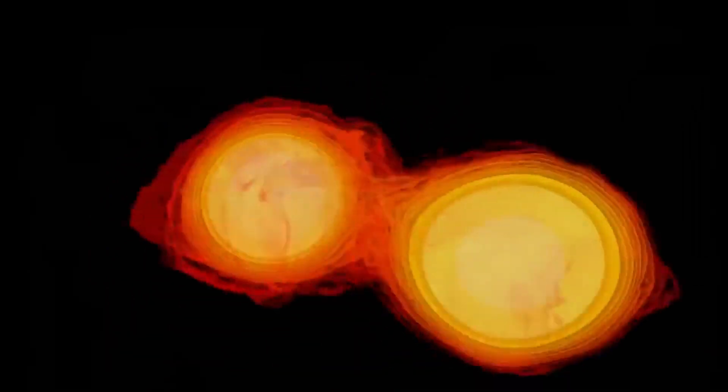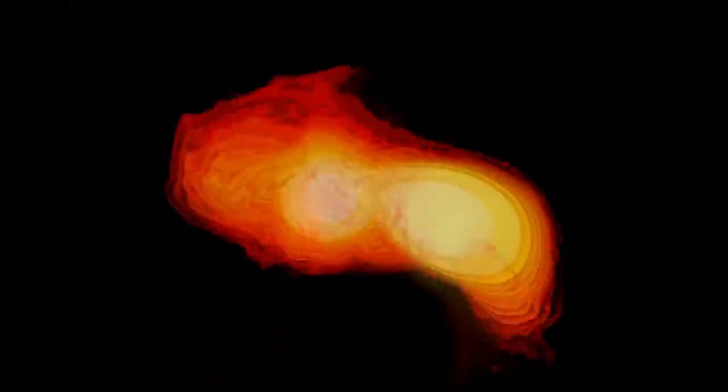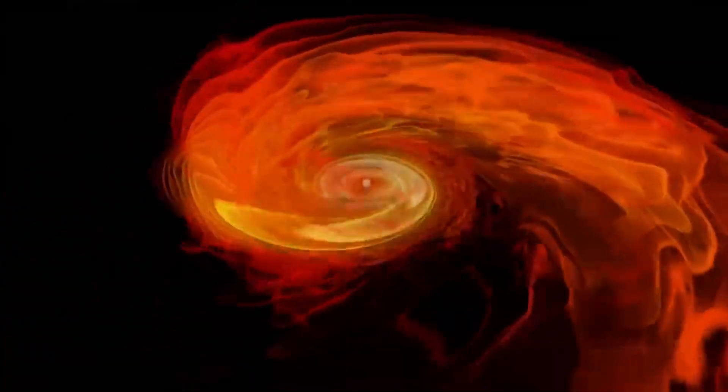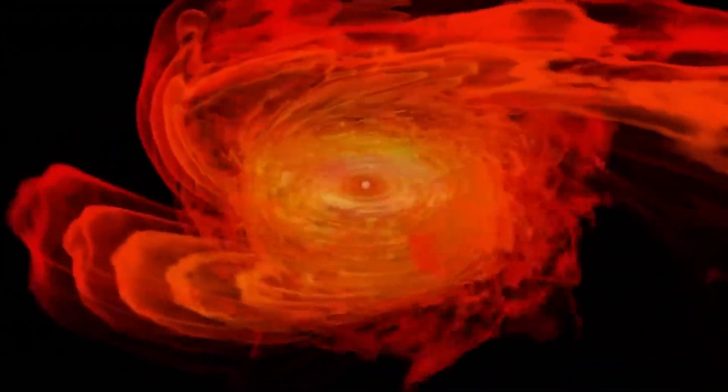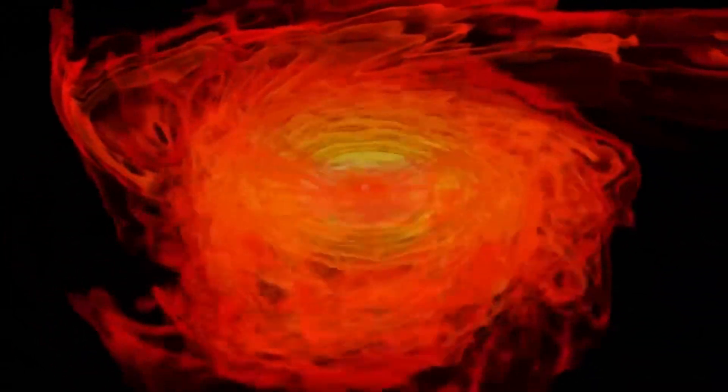The second hypothesis, which is more reasonable, suggests that uncontrolled collisions of massive stars within dense star clusters and their subsequent collapse lead to the formation of intermediate-sized black holes, with masses ranging from hundreds to even thousands of solar masses.